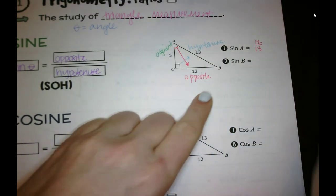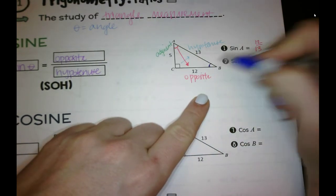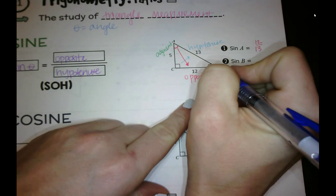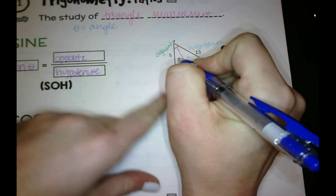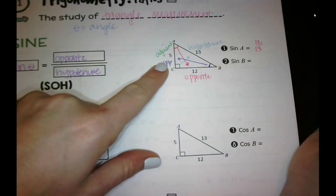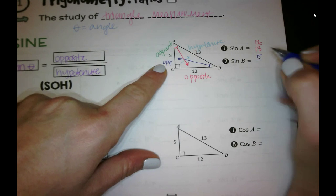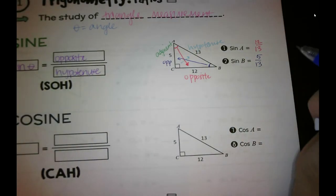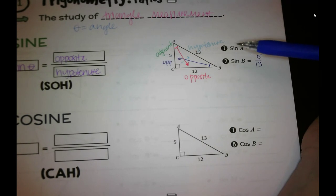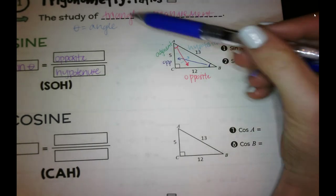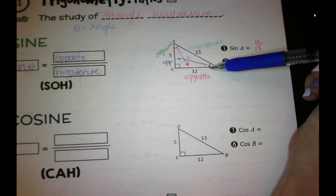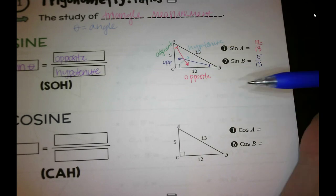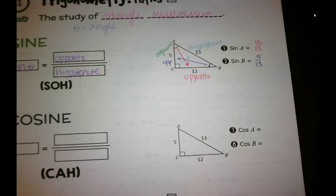So then sine of B, if our angle is here, then the opposite side is 5 now. So then that would be 5 over 13. Our hypotenuse is never going to change no matter what angle we're talking about. Another important thing to note is our trigonometry ratios are always going to be using these two angles. It's never going to be up at 90 degrees.